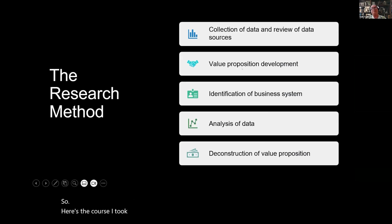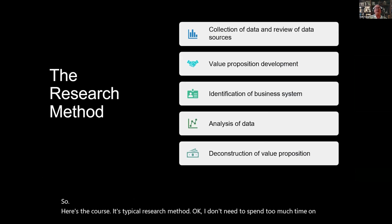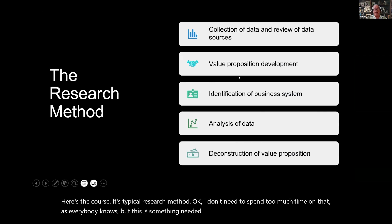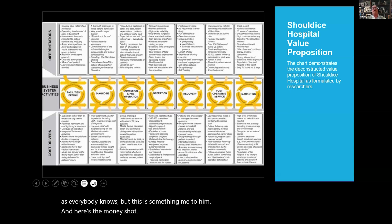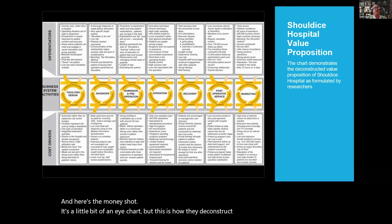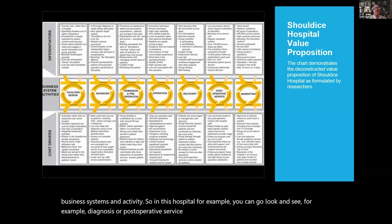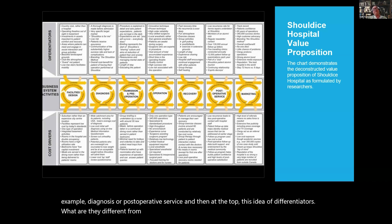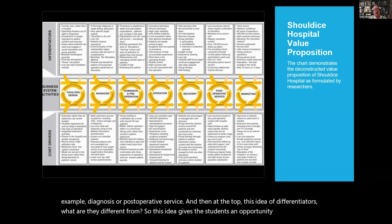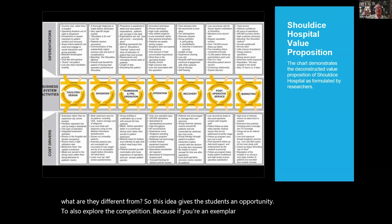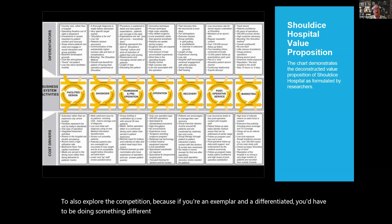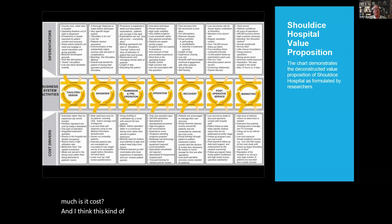Here's the typical research method. This is something new to the students. And here's the money shot — it's a bit of an eye chart, but this is how they deconstructed it. They go through the business systems and activities. In this hospital, for example, you can look at diagnosis or post-operative service. At the top is the idea of differentiators — what are they doing differently from the competition? And at the bottom are the cost drivers — how much does it cost? This framework sets up well with the simulation.